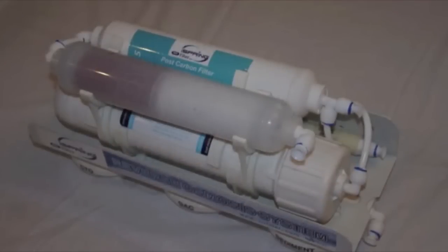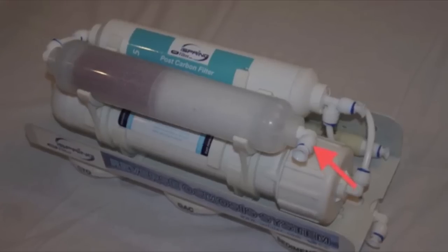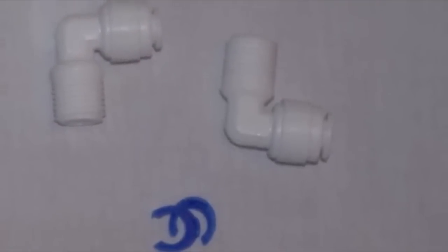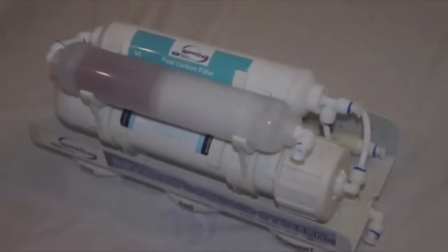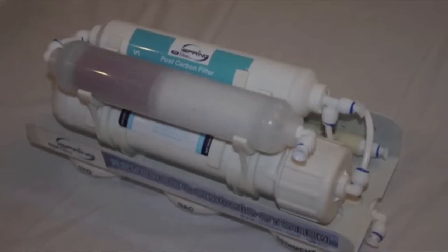For either the post carbon filter or the pH balance filter, first remove the tubing. Then unscrew the fittings and install them onto the new filter. You may need to add a few wraps of Teflon tape to the threads. Install the new filter into the holder clips and reinstall the tubing.